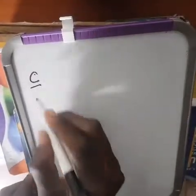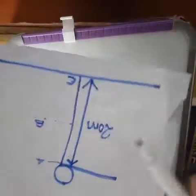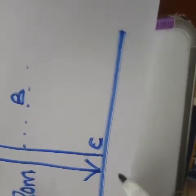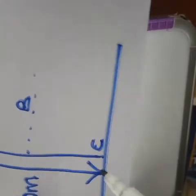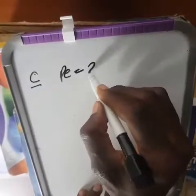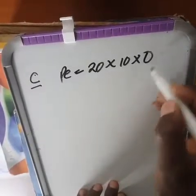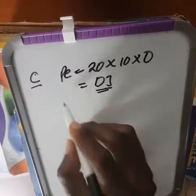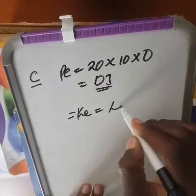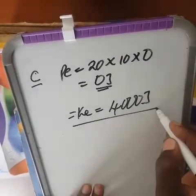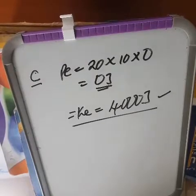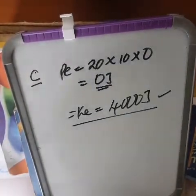At point C, there is no height, so potential energy = m × g × 0 = zero joules. Therefore kinetic energy is maximum at point C. All the potential energy from point A has been converted to kinetic energy, so kinetic energy at C becomes 4,000 joules. If asked to give a reason, say: all the potential energy at A has been converted to kinetic energy at C.